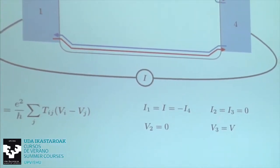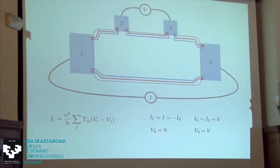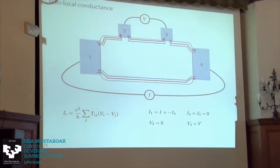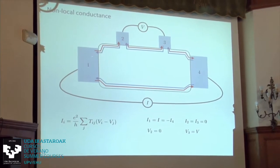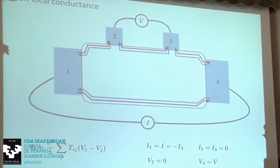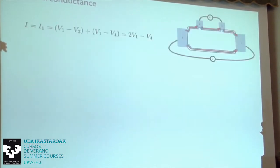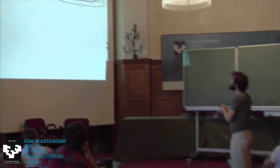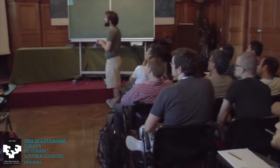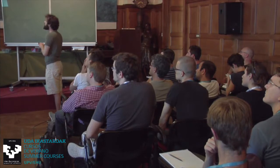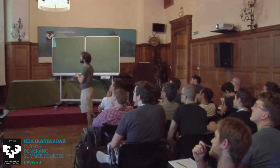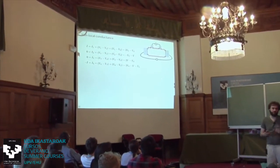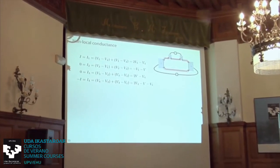Plugging into the Landauer-Büttiker formula: since these states don't get backscattered, the transmission probability from lead 1 to 2 is one — one always goes to two and nowhere else, and similarly for the others. The transmission probabilities are either zero or one. Doing the calculation, I find the conductance G = 4e²/h. When I was younger I did this calculation and was really confused when I got 4.